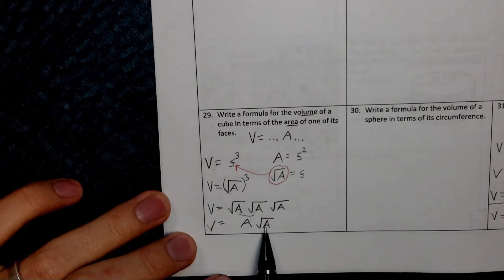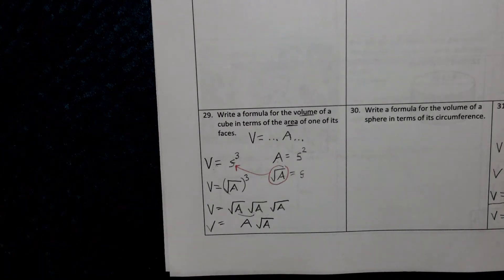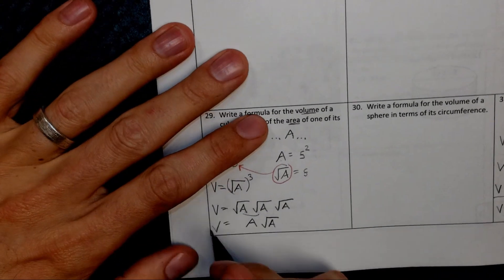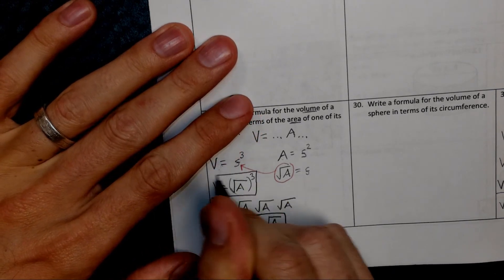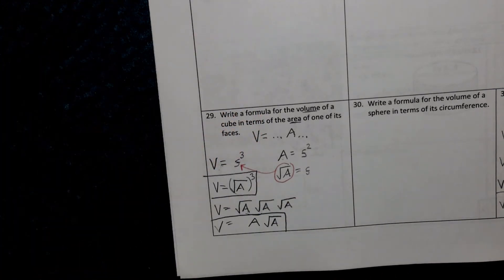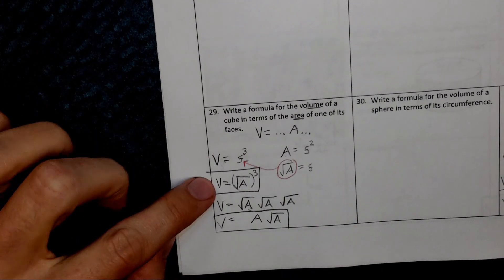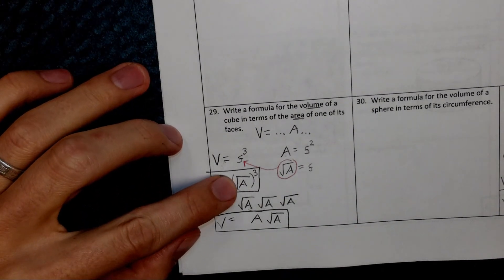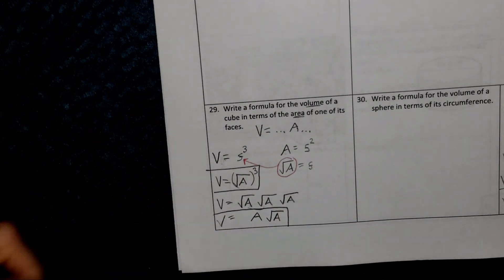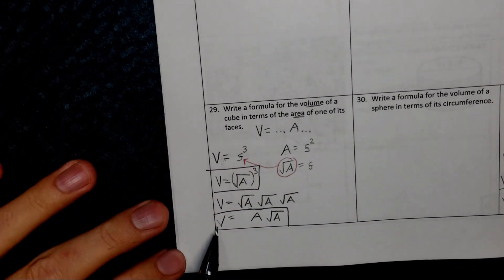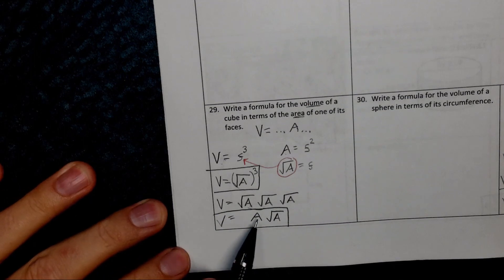Can I multiply this A times the square root of A in a meaningful way? No, not really. So I could leave it like that or maybe even like that. And that is the volume written in terms of the area. So there are a couple of different ways you might write the formula. A formula for the volume based on the area.